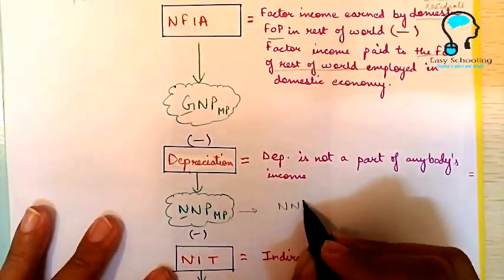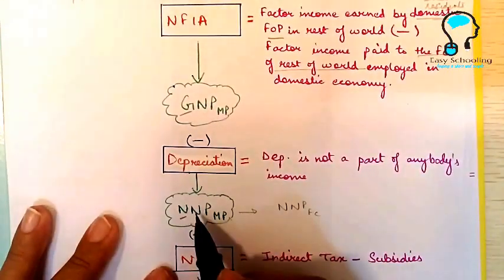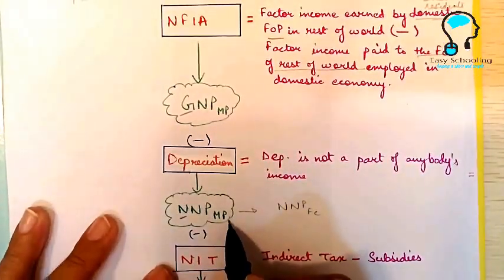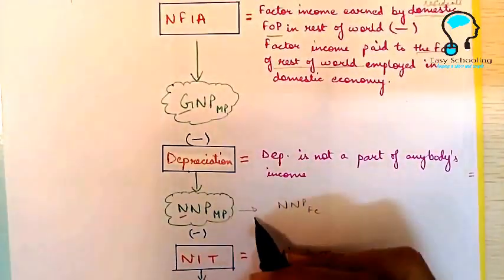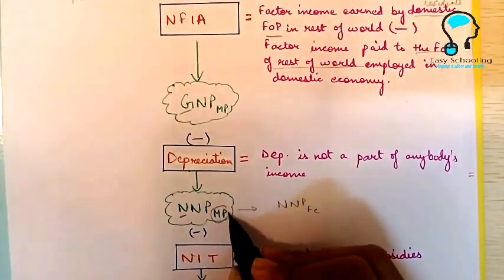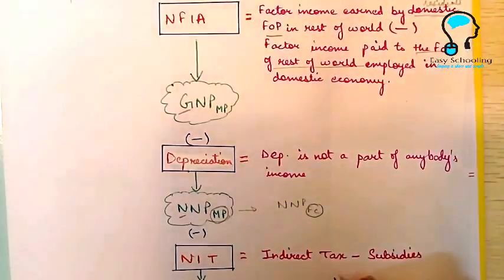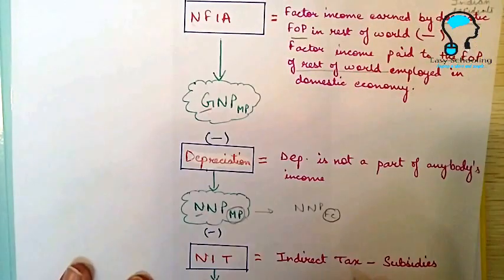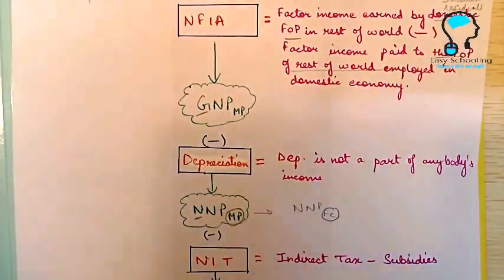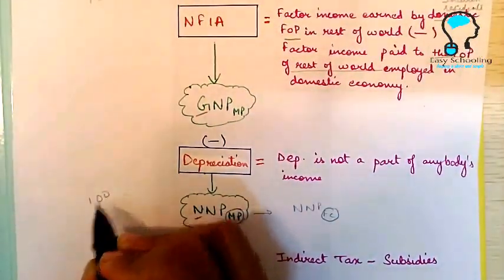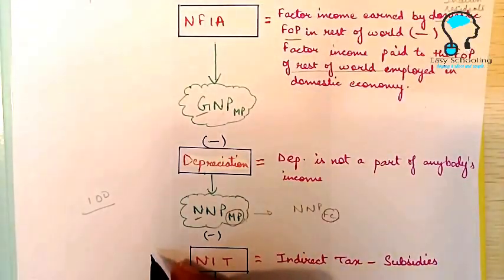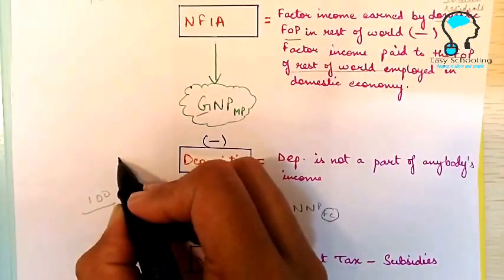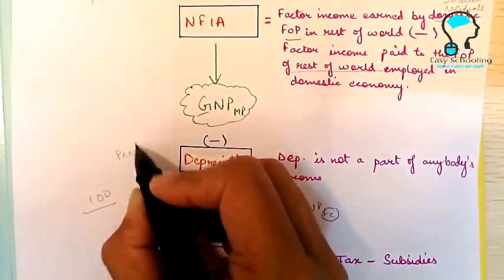Now we are very close to national income. National income is NNPFC and we have got NNPMP. Now what is left to change? We have to change market price to factor cost. Now try to understand this with the help of an example. Suppose you purchase a commodity of hundred rupees from the market. What is the producer of this commodity receiving? The producer will receive say 80 rupees.